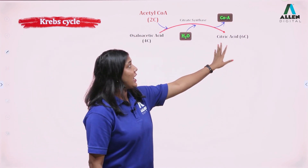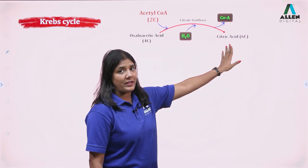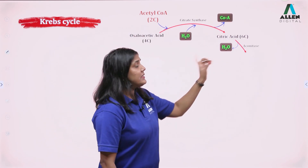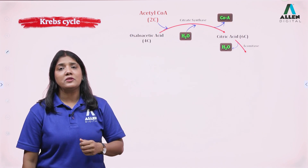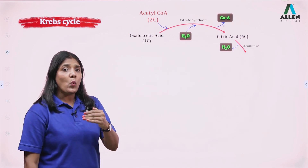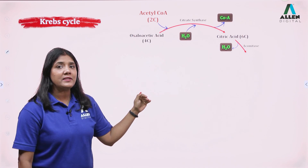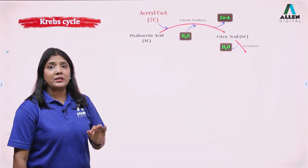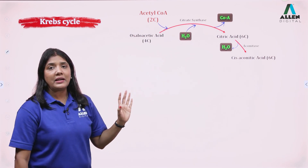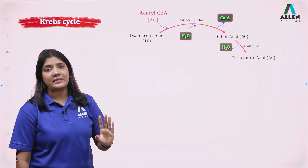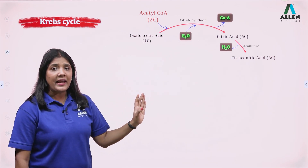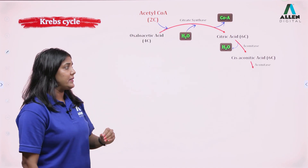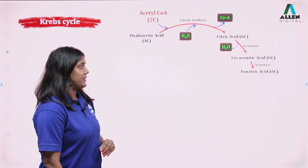Citric acid, in the presence of enzyme aconitase, will lose water — this is dehydration — and will be converted into cis-aconitic acid. Again, cis-aconitic acid in the presence of enzyme aconitase will form isocitric acid.